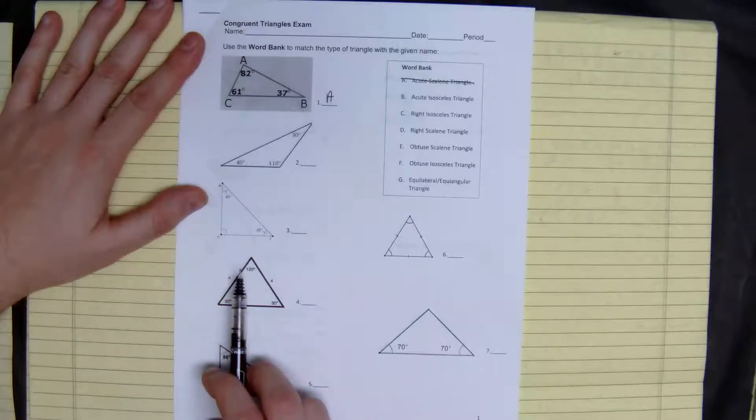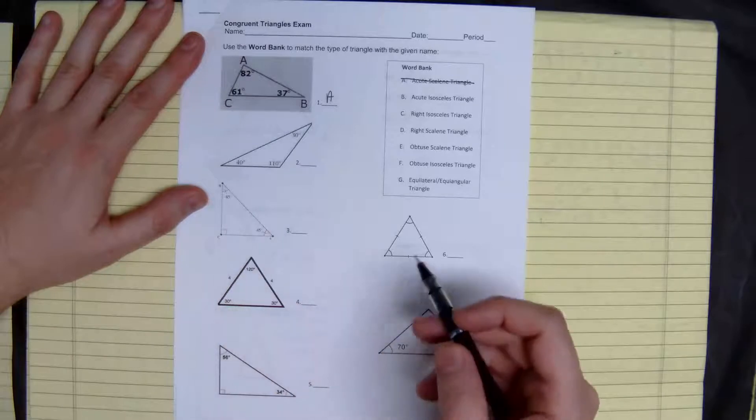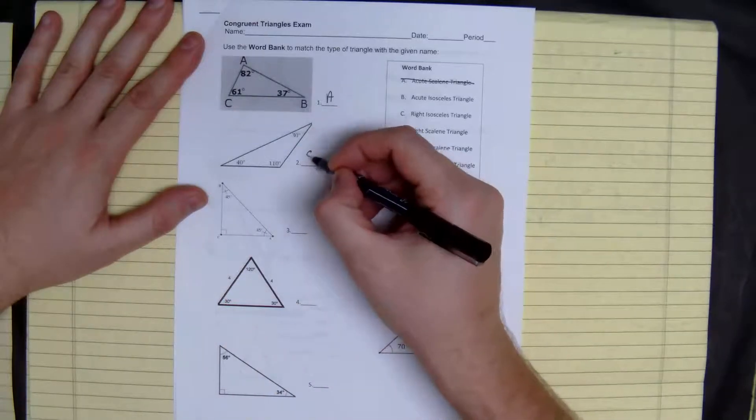Here, it looks like we have an obtuse angle, two different angles, therefore we have two different sides. This is an obtuse scalene triangle.